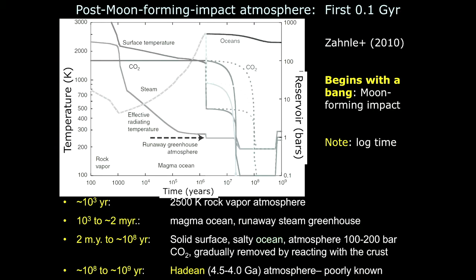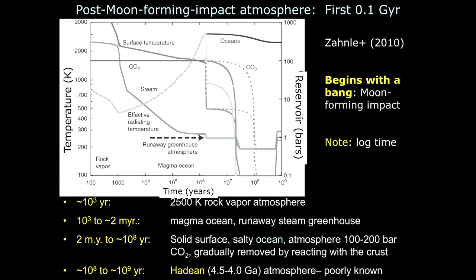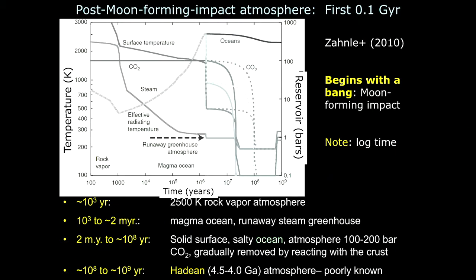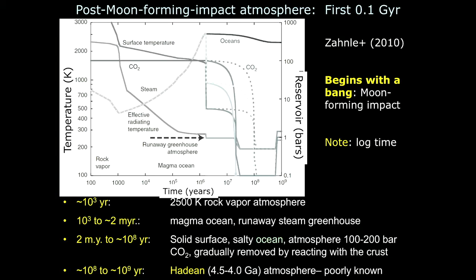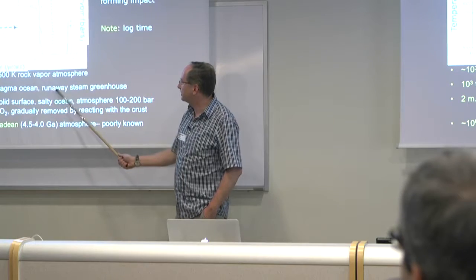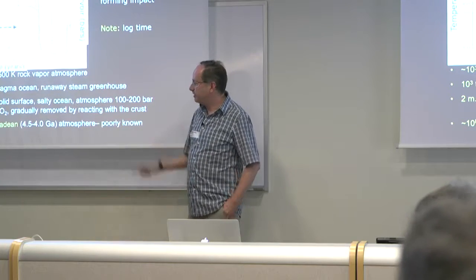Initially, if you have a giant impact — such as Mars smashing into the proto-Earth, which is what we think formed the Moon — the water would be steam. You'd have a huge rock atmosphere first, then steam after the rock condenses. The steam would eventually condense into an ocean once it cools radiatively. That's within a timescale where you have a runaway steam atmosphere from about a thousand years to two million years, and underneath, a magma ocean.